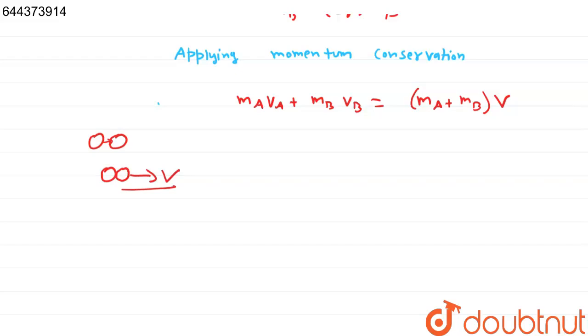Now, m_A is m because both have same mass, and v_A is 6î. m_B is again m, and v_B is 8ĵ. This equals (m_A plus m_B), which is 2m, times vector V.